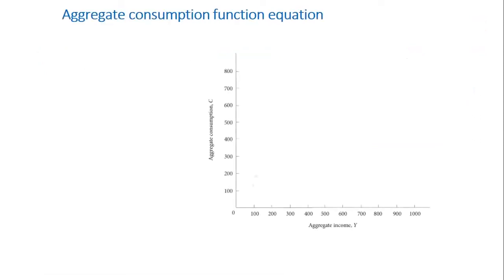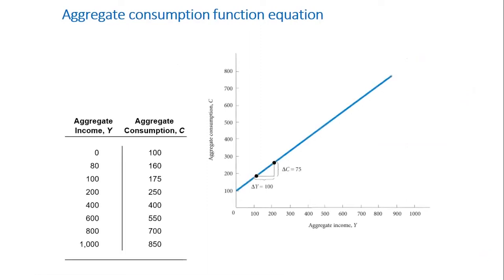In order to better understand the consumption function, we have a numerical example here. In this simple consumption function, consumption is 100 at income of 0 and consumption is 400 at an income of 400. So as you can see, as income rises, so does consumption.